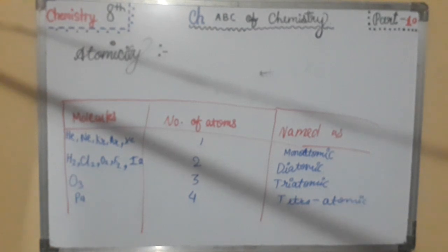After that, there is S6, S8. And after that, C60. Number of atoms are more than 4. And named as polyatomic.